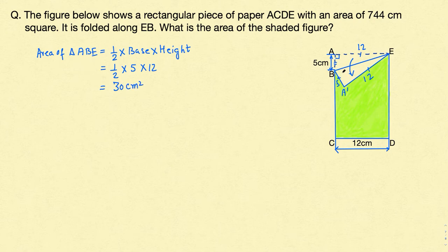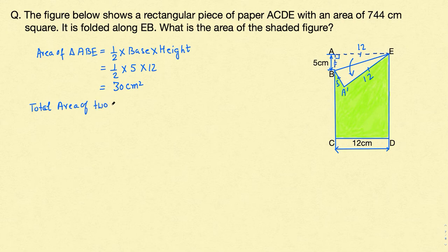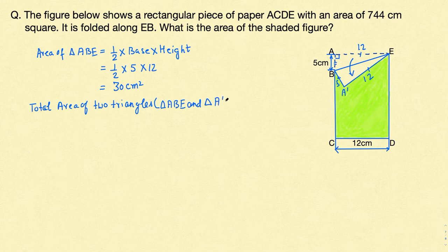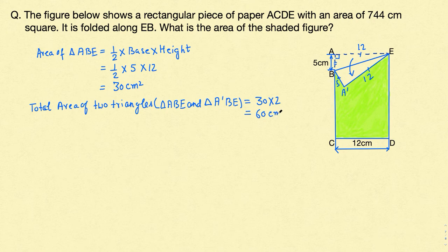The area of ABE is 30 cm² and the area of BEA dash is also 30 cm², because they are the same triangle. So the total area of the two triangles — triangle ABE and triangle A dash BE — is 30 times 2, which gives us 60 cm².